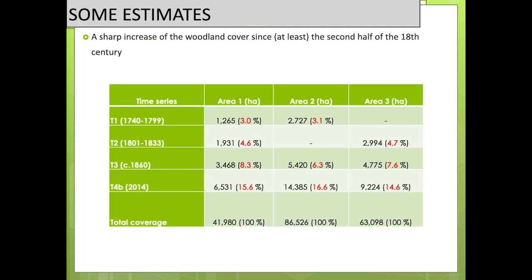It's possible, thanks to GIS, to quantify these changes over time. In Area One — shown earlier in orange — the woodland cover increased from 3% to 4.6%, 8.3%, then 15% by 2014. The same trend was found in Area Two, for which we didn't have estate maps in this time series, and the same for the third area.